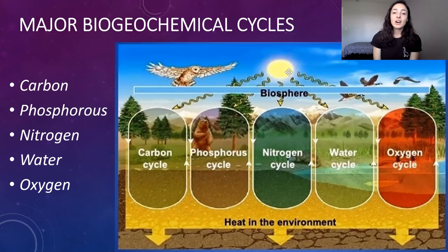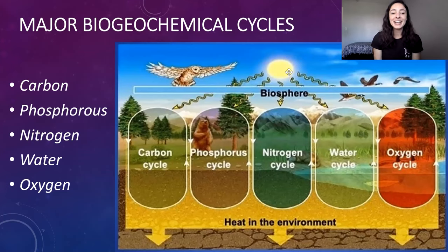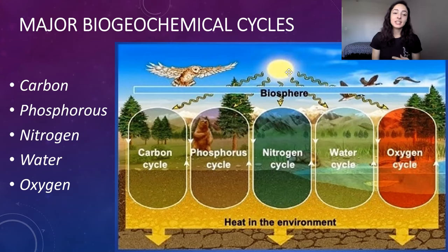First, let's talk a little bit about the major biogeochemical cycles. These major cycles include carbon, phosphorus, nitrogen, water, and oxygen — because they're important for life (bio), they're important for the processes in the geosphere (geo), and they're important chemically (chemical).